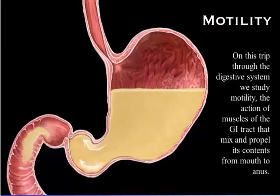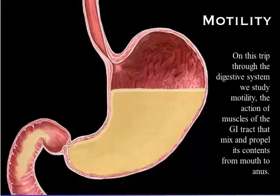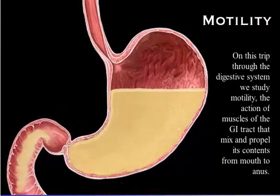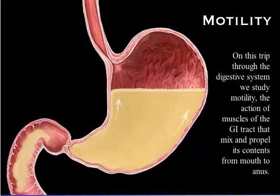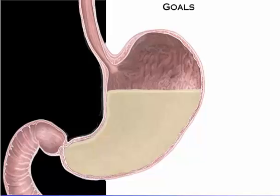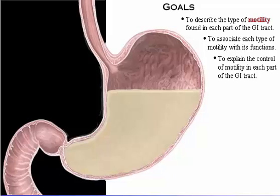On this trip through the digestive system, we study motility, which is the action of muscles of the GI tract that mix and propel its contents from the mouth to the anus. Your goals for learning are to describe the type of motility found in each part of the GI tract, to associate each type of motility with its functions, and to explain the control of motility in each part of the GI tract.